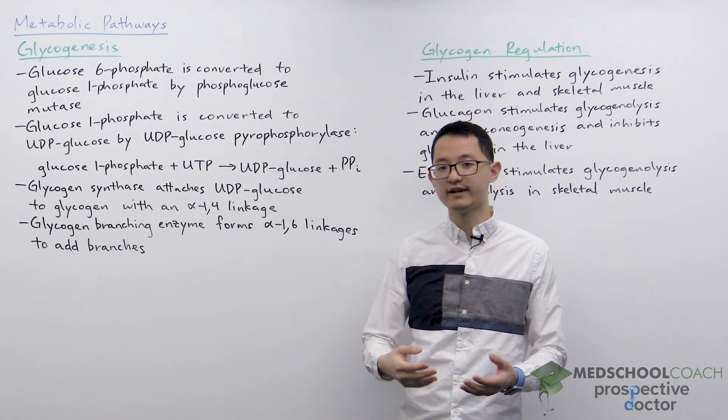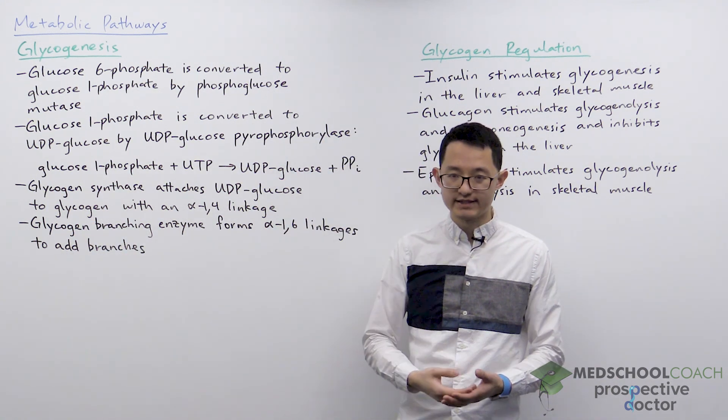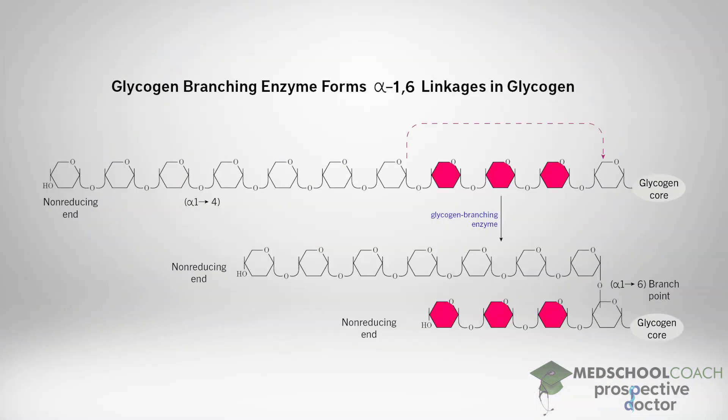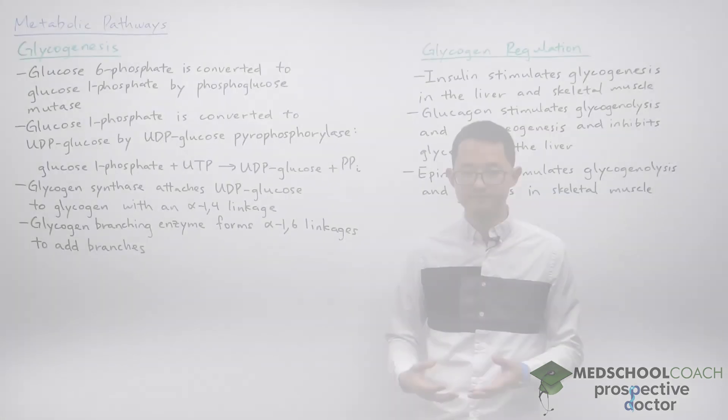And finally, in this diagram you can see the role of the glycogen branching enzyme. Glycogen branching enzyme takes chains of glucose monomers and forms alpha-1,6 linkages to add more branches to glycogen.